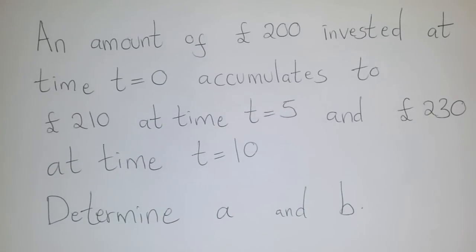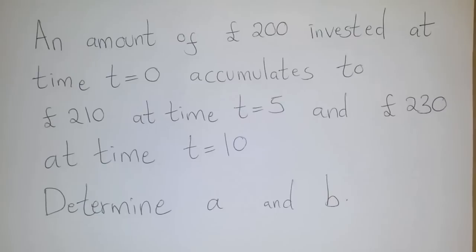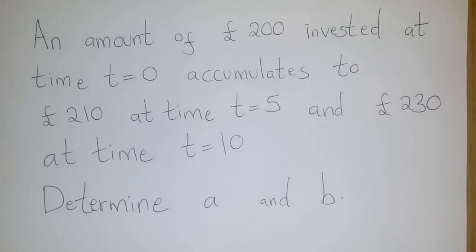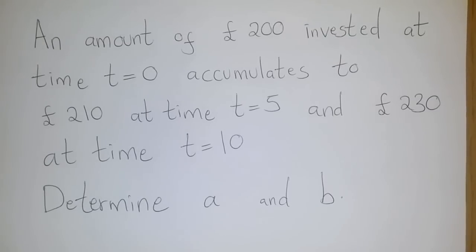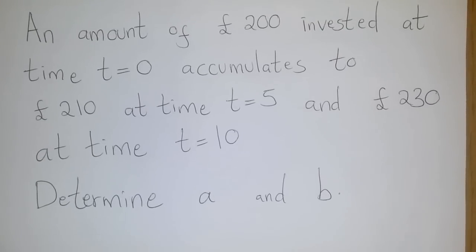An amount 200 invested at time t equals 0 accumulates to £210 at time t equals 5 and £230 at time t equals 10. Determine a and b.